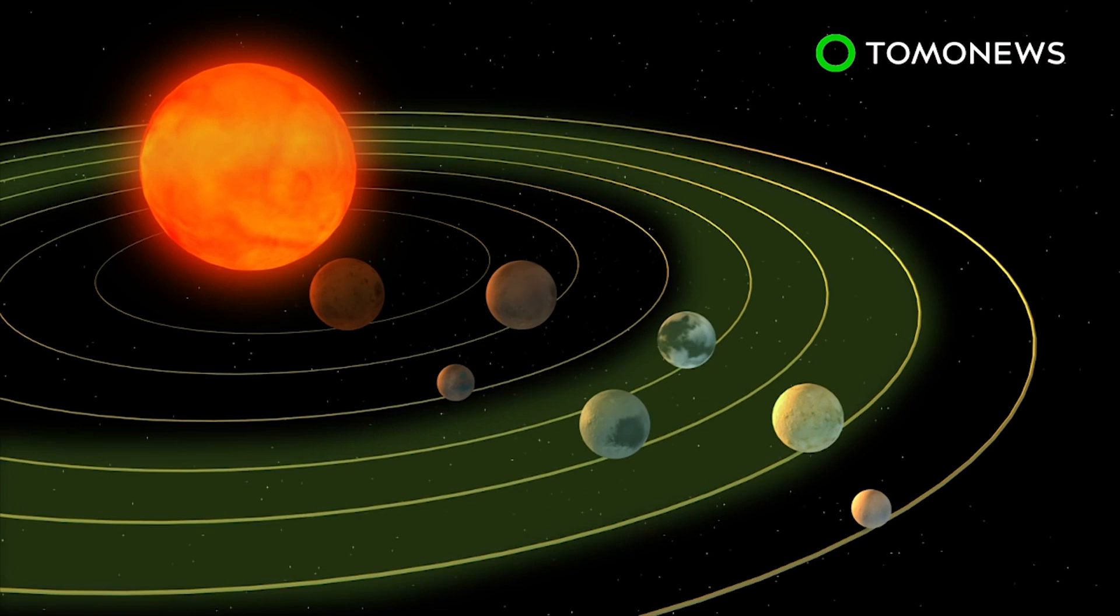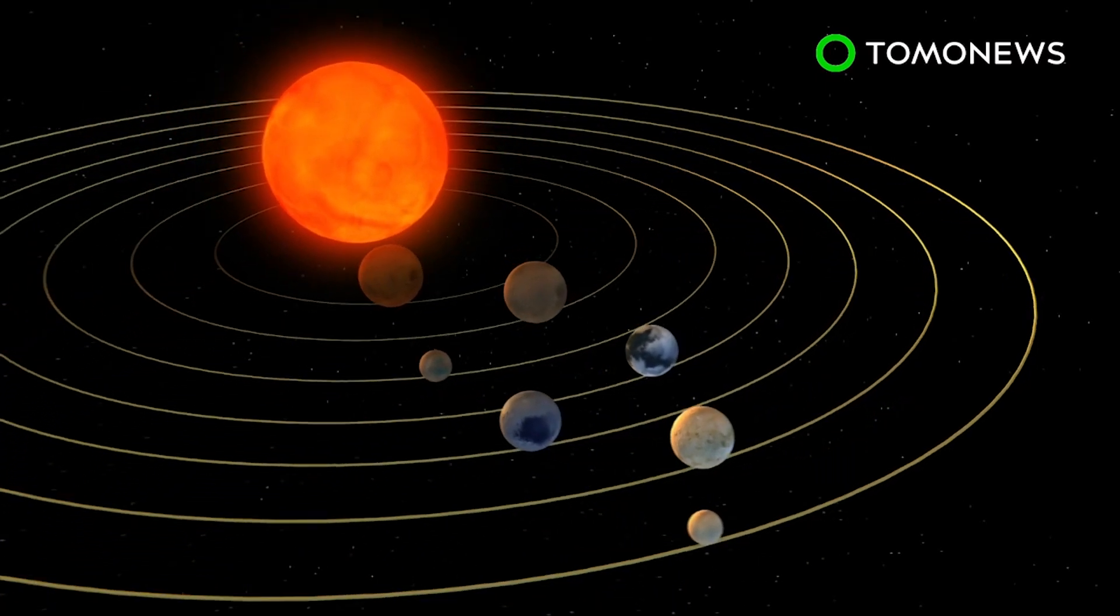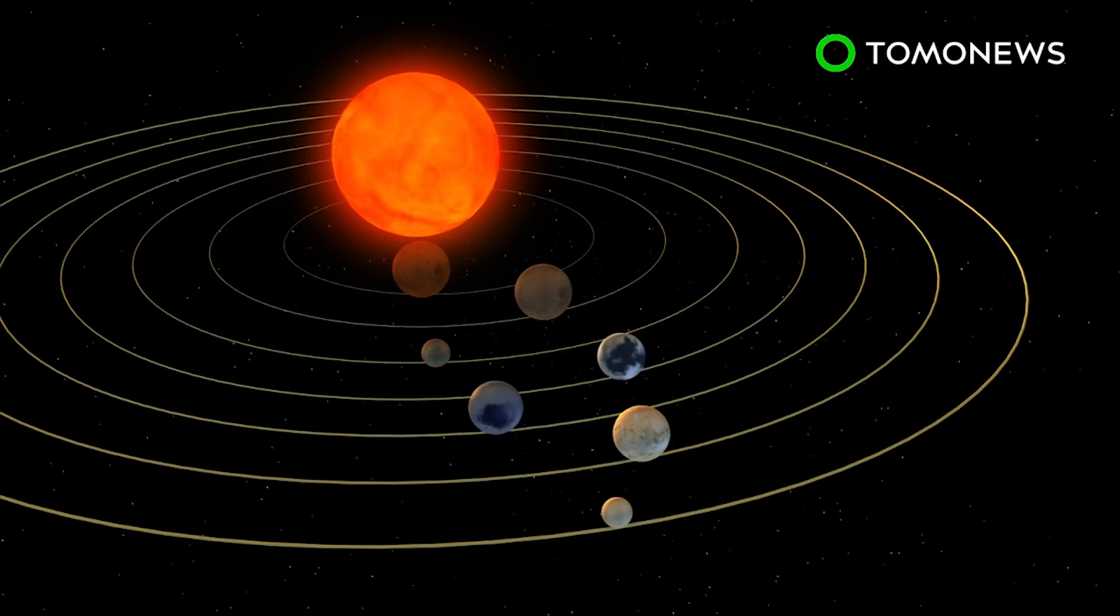Three of these planets are believed to be in the habitable zone, close to the system's ultra-cool dwarf star. These planets take six, nine, and twelve days respectively to orbit the dwarf star.